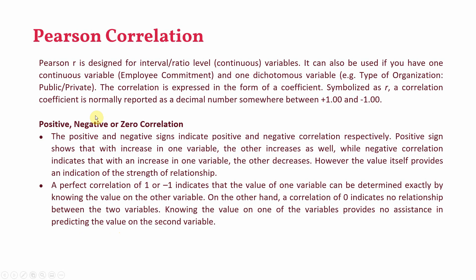Pearson correlation is designed for interval/ratio continuous variables. It can also be used if you have one continuous and one dichotomous variable, like type of organization: public or private. The correlation is expressed in the form of a coefficient symbolized as r, and the value of the correlation will range between +1 and −1, where the plus sign indicates positive and the minus sign indicates negative correlation.